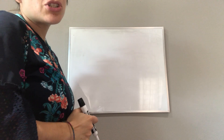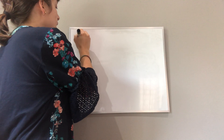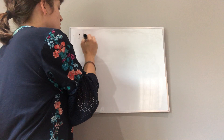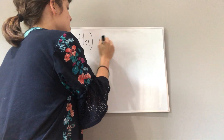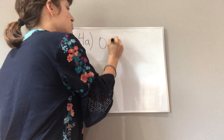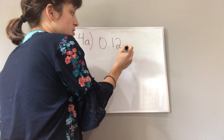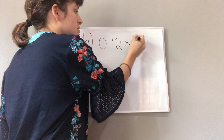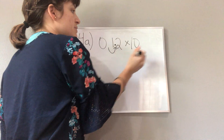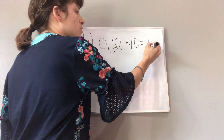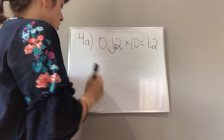Let's check some of those together. We have 4a on page 9 in your textbook: twelve hundredths times ten. We move the decimal place over one place value and you get one and two tenths.